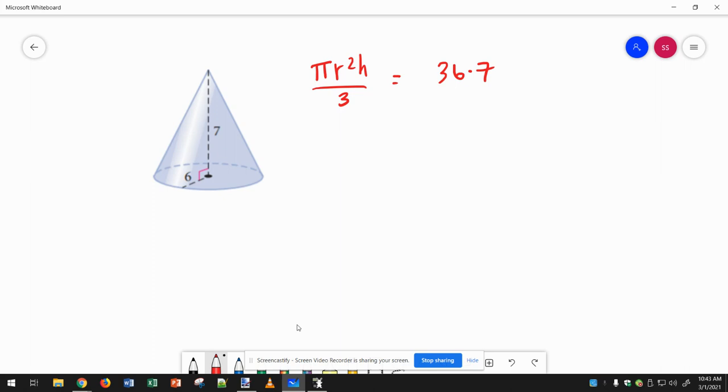So 36 times 7, and then I'm going to divide by 3. So you get 252 over 3, which is 84, and then I'm going to do the pi at the very end.